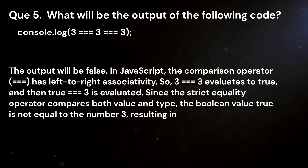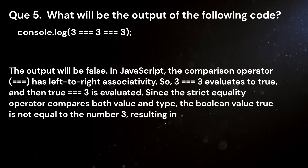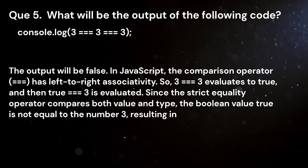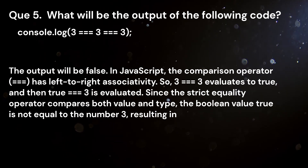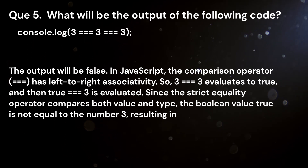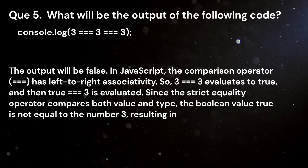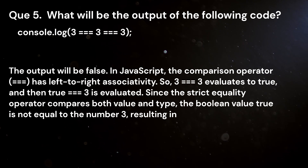Question 5. What will be the output of the following code? console.log(3 === 3 === 3). Answer. The output will be false. In JavaScript, the strict equality operator === has left to right associativity. So, 3 === 3 evaluates to true, and then true === 3 is evaluated. Since the strict equality operator compares both value and type, the boolean true is not equal to the number 3, resulting in false.